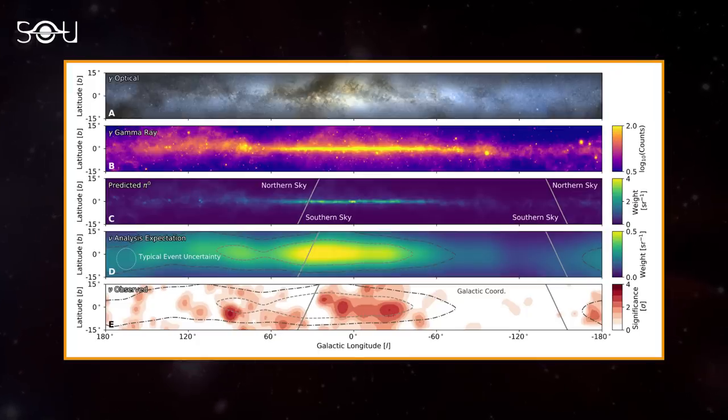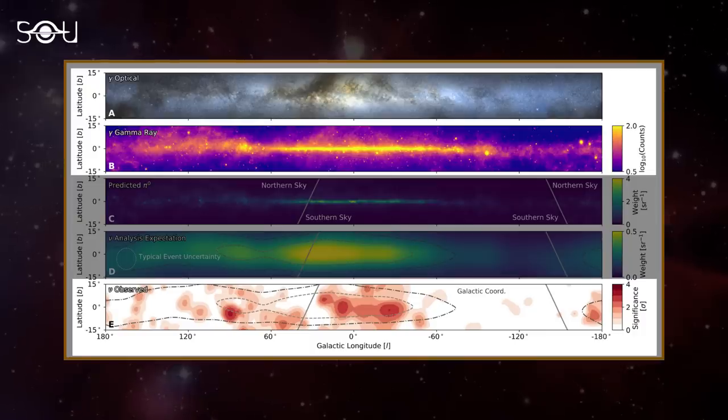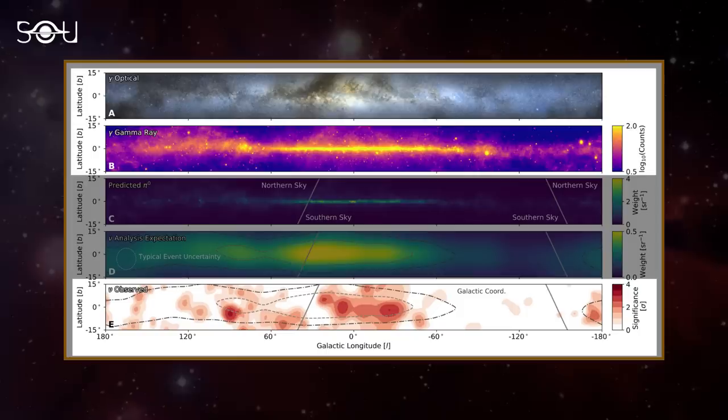When comparing this neutrino map with maps obtained at optical and gamma-ray frequencies, a striking observation emerges. The neutrinos overwhelmingly originate from regions with previously detected high gamma-ray counts.